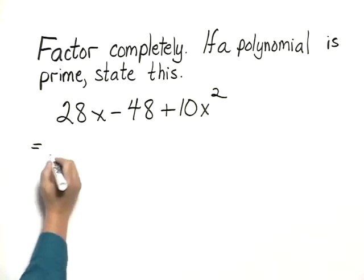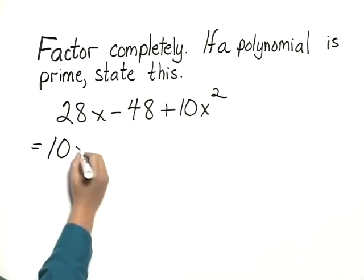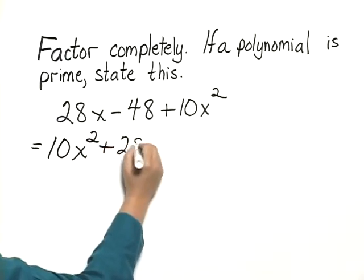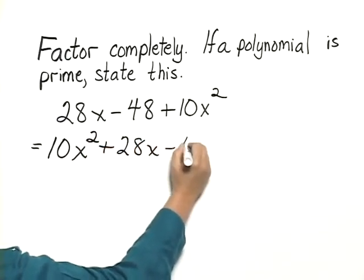Let's begin by writing this in descending order so we can recognize any patterns. We have 10x squared plus 28x minus 48.